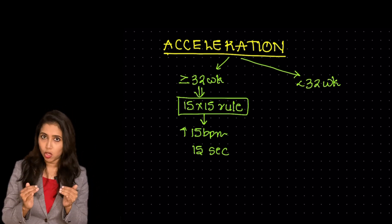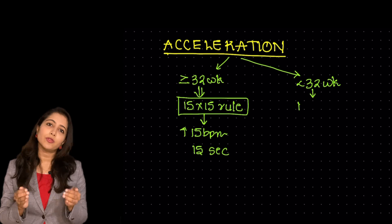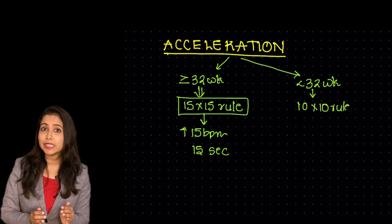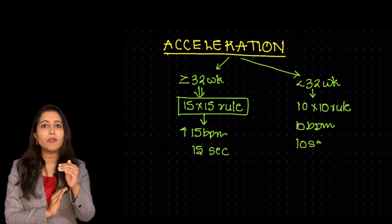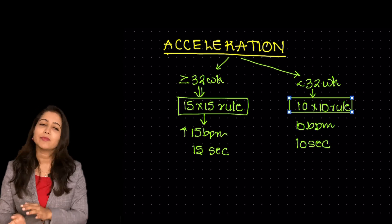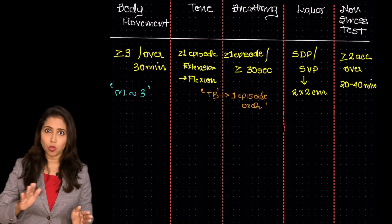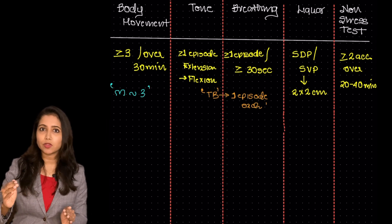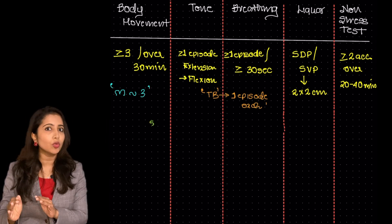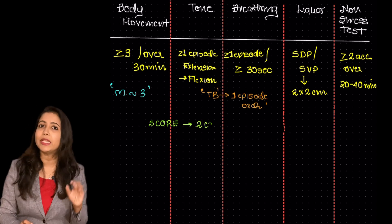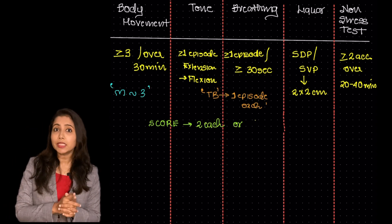If the POG is lower, the cut-offs are also lower. That is, the rise is at least for 10 beats over a period of 10 seconds. Just remember that if everything is okay, everything would be given a score of 2 each. There is no score in between. If it is abnormal, the scoring would be 0.